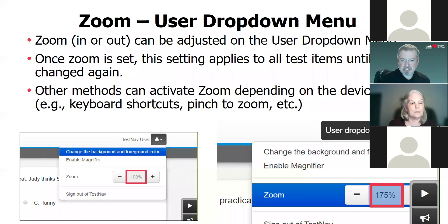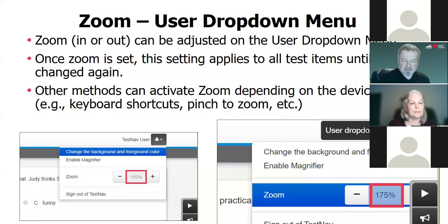Zoom, by changing the zoom setting, magnifies the entire screen, not just a portion of it. There is some caution here — if it's zoomed in too much, there's going to be a lot of scrolling. This should all be tested prior to testing to see what zoom level would be best for the student. It's all relative to the size of the screen. Zooming on a small screen would require a lot more scrolling than on a larger monitor. You can change it through the user dropdown menu, and there are other shortcuts — on a touch screen device it can be pinched and zoomed, and on a laptop or desktop there are keyboard shortcuts.